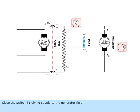Close the switch S1 giving supply to the generator field. Slowly cut out the resistance of the rheostat.